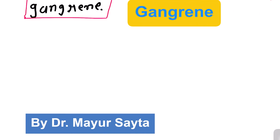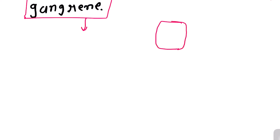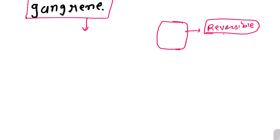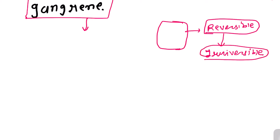Today we are going to discuss the basics of gangrene. When a cell is not getting enough oxygen, it is known as hypoxia. First, the cell goes into the stage of reversible injury, but if oxygen continues to not be delivered, the cell goes into irreversible injury, and with further progression, it goes into the stage of necrosis.